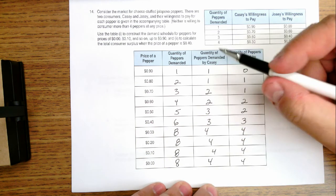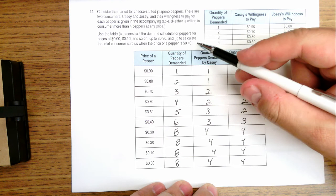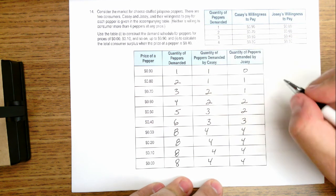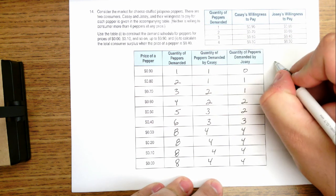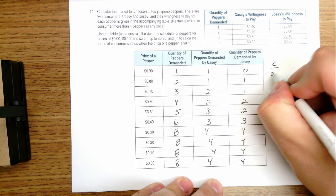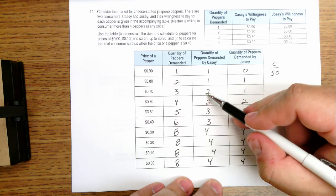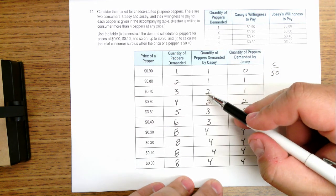When it comes to the consumer surplus, if the price of the pepper is $0.40, we'd see that Casey was willing to buy a pepper at $0.90. So the first pepper would bring her $0.50 of happiness, or of consumer surplus. The second one, she was willing to pay $0.70 for. So if the price is actually only $0.40, she has $0.30.